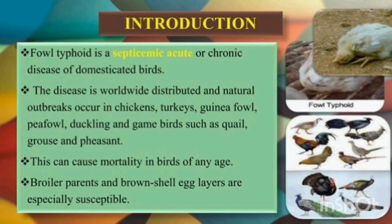Today I'm going to describe one of the most important and most common diseases of poultry, termed as fowl typhoid. Fowl typhoid is a septicemic, acute or chronic disease of domesticated birds. This disease is distributed worldwide and naturally occurs in chickens, turkeys, guinea fowl, peafowl, ducklings, and game birds such as quail, grouse, and pheasant. It can cause disease in birds of any age but mostly affects young birds. It can also affect breeders and brown shell egg layers.